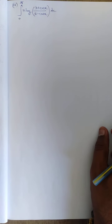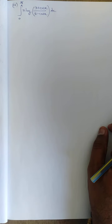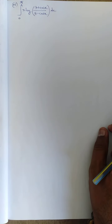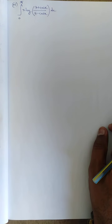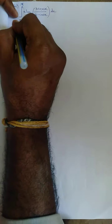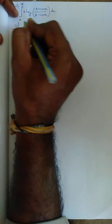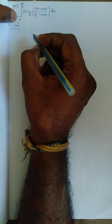We have the integral from 0 to 2π. Now we are going to change our properties for x·log[(3+cosx)/(3-cosx)]. In this we are going to use two types of properties. Let's see what the first property is.